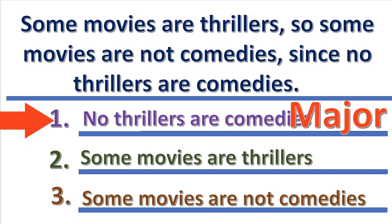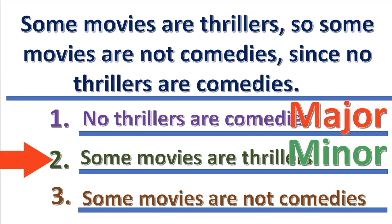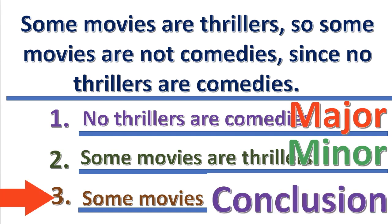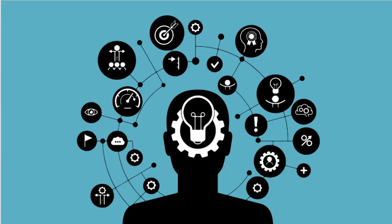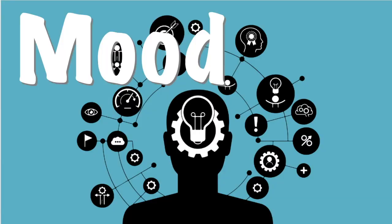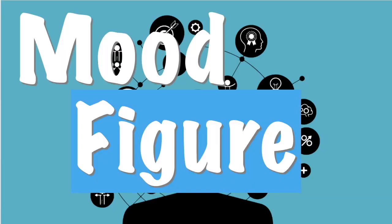The major premise is written first, the minor premise second, and the conclusion last. Good job learning the standard form! Next, we will learn about the mood and figure of the categorical syllogism.